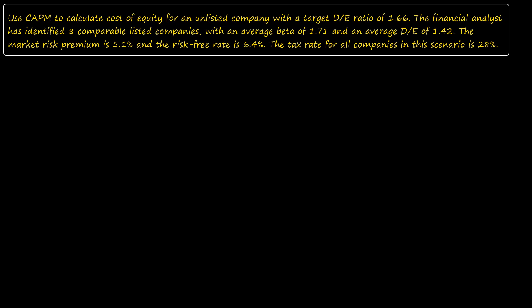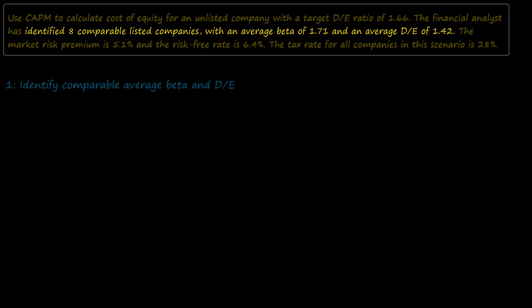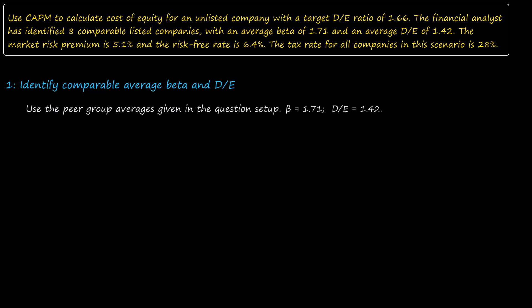We begin by identifying a peer group of comparable listed companies. Because such companies are listed, their betas and D/E ratios will be known, and we can use these data points to calculate the averages. In this question setup, both the average beta and the average D/E ratio are given, so no further computation is needed from us.